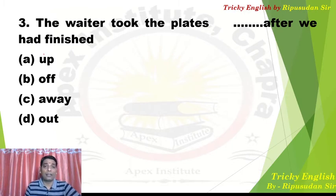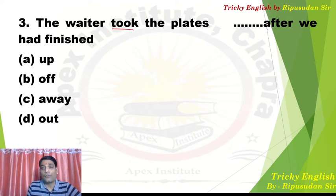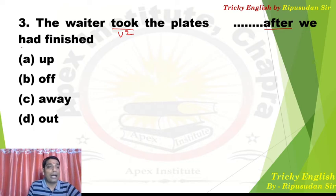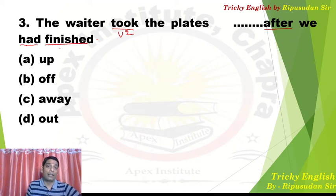Question 3: 'The waiter took the plates dash after we had finished.' Two things are visible here — we need to fill a preposition with 'took', and there is a very special tense structure. If V2 comes before 'after', then after 'after' we must use 'had + V3'. Please remember this rule. All options use 'take' — since 'took' is the V2 of 'take'.